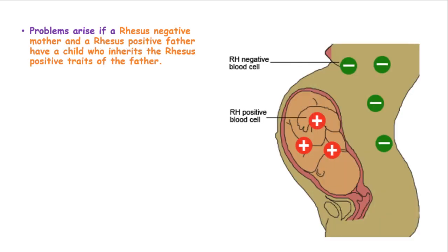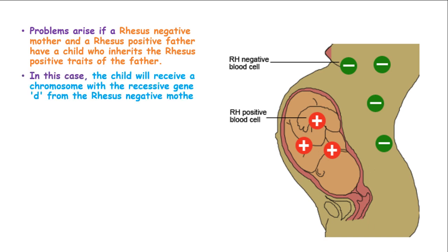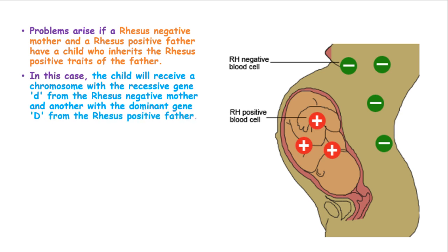Therefore, they may develop transfusion reactions when transfused again with D positive blood. Problems arise if a Rhesus negative mother and a Rhesus positive father have a child who inherits the Rhesus positive traits of the father. In this case, the child will receive a chromosome with the recessive gene small d from the Rhesus negative mother and another with the dominant gene capital D from the Rhesus positive father.